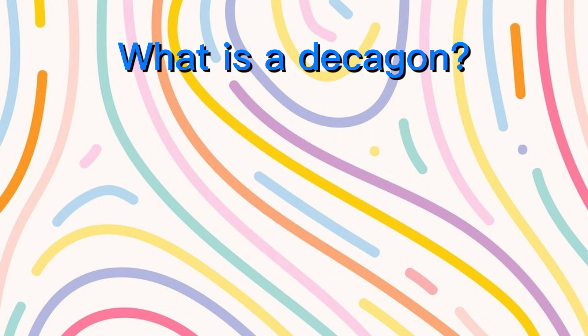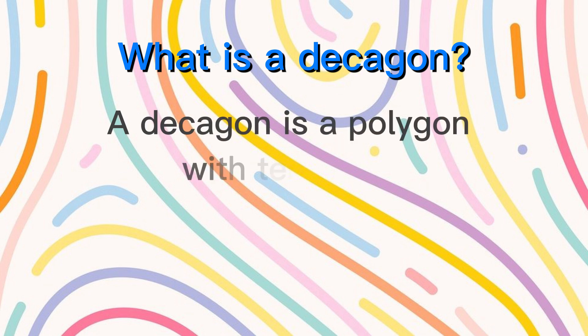What is a decagon? A decagon is a polygon with ten sides.